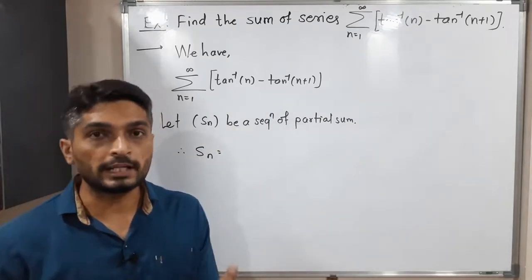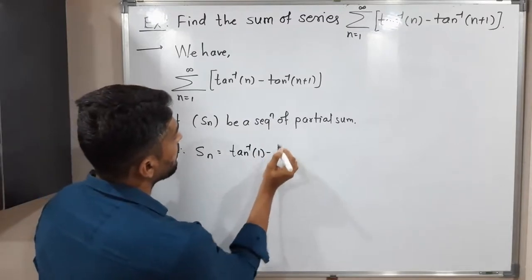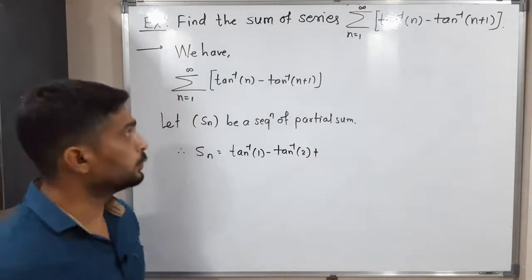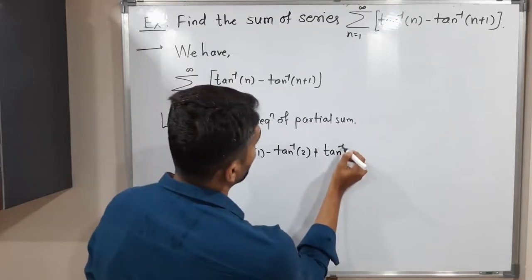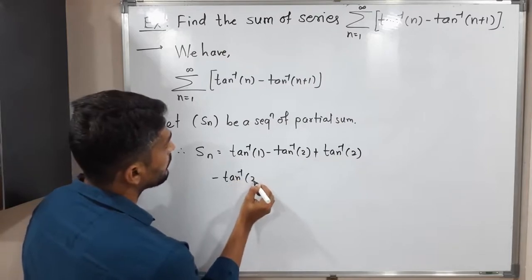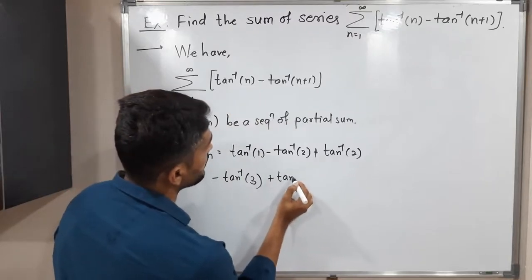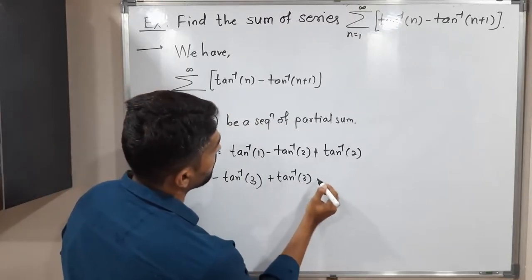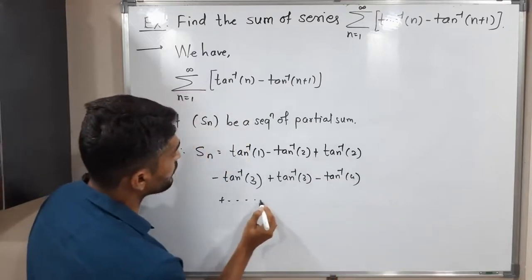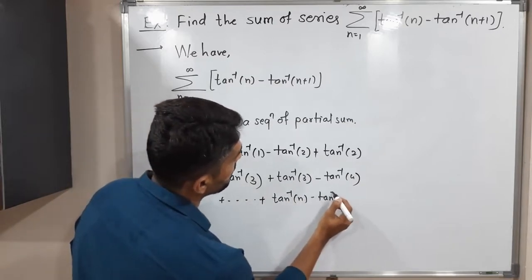Let us find the first term by putting n equal to 1. We will have tan inverse 1 minus tan inverse 2. Plus, let us put n equal to 2: we will have tan inverse 2 minus tan inverse 3. Let us put n equal to 3: we will have tan inverse 3 minus tan inverse 4, and so on. The last nth term will be tan inverse n minus tan inverse n plus 1.